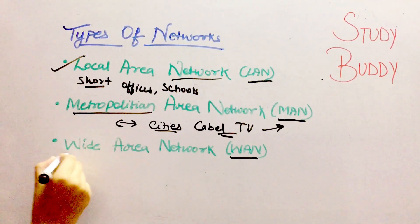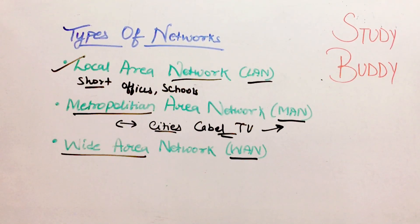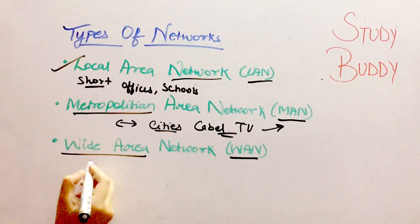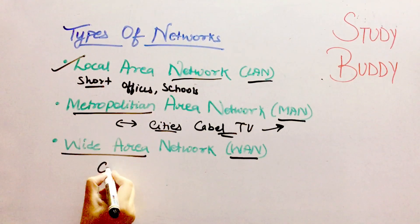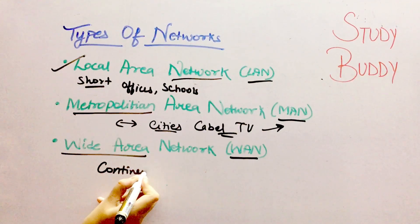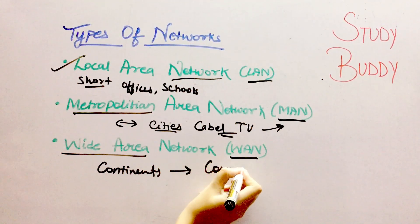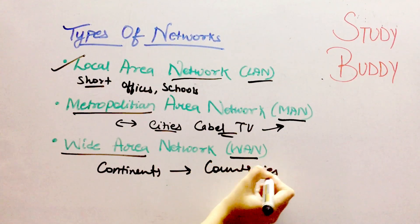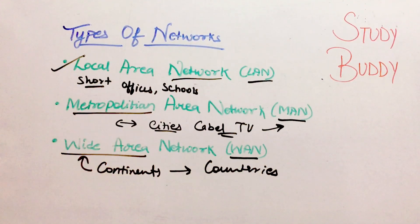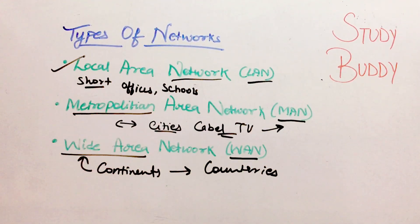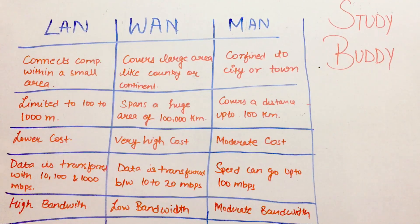Next comes the Wide Area Network. This is the largest area network, covering various continents or countries. Network sharing between continents and countries is done through Wide Area Networks. So here is a difference between LAN, WAN, and MAN.